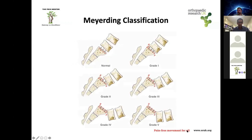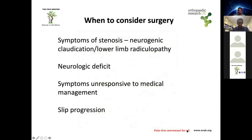The Meyerding classification grades the severity of slippage by dividing the superior end plate of the vertebra below into four quadrants. Grade 1 is up to 25% slip, Grade 2 up to 50%, Grade 3 up to 75%, Grade 4 is hinging at the edge, and Grade 5 is spondyloptosis — when the vertebral body completely comes off the end plate below.